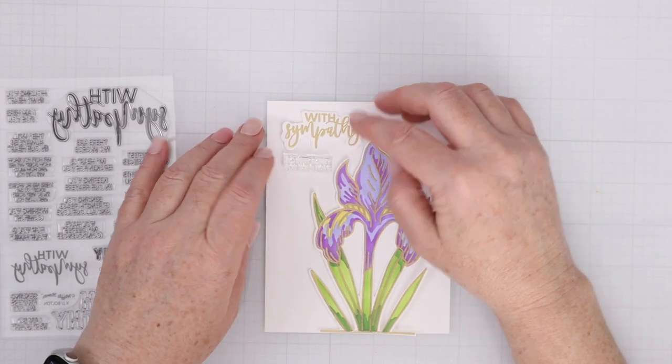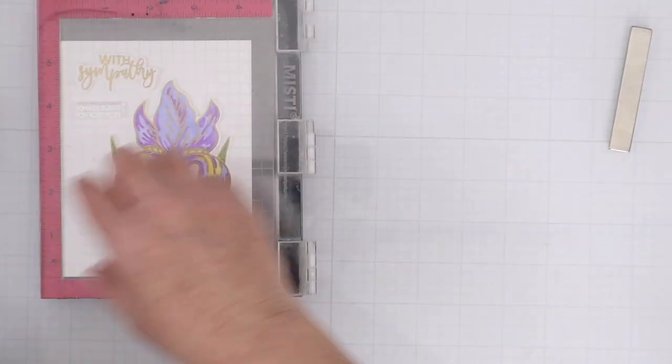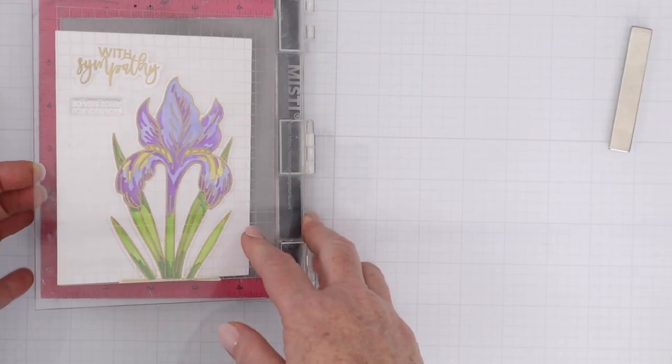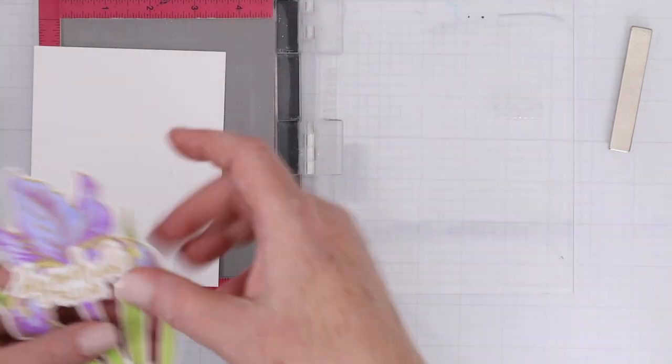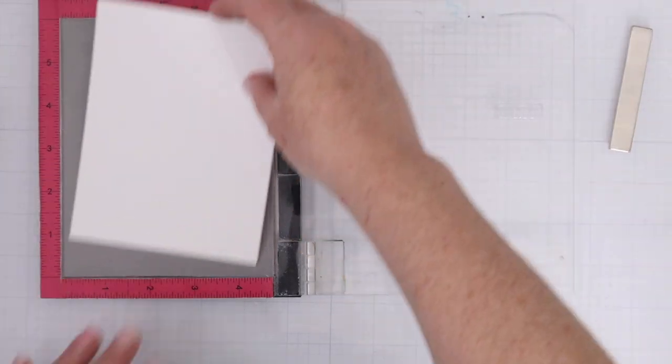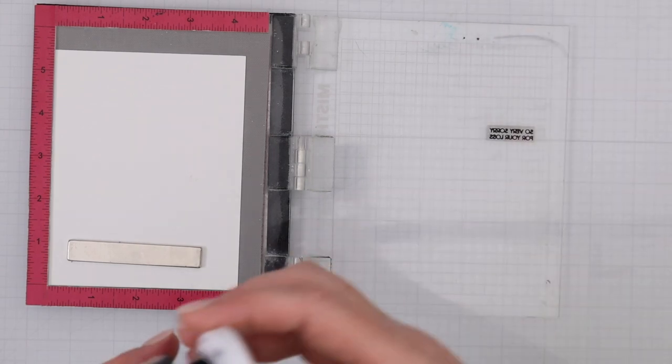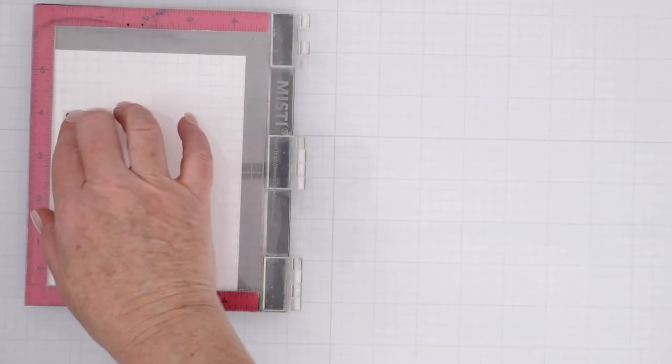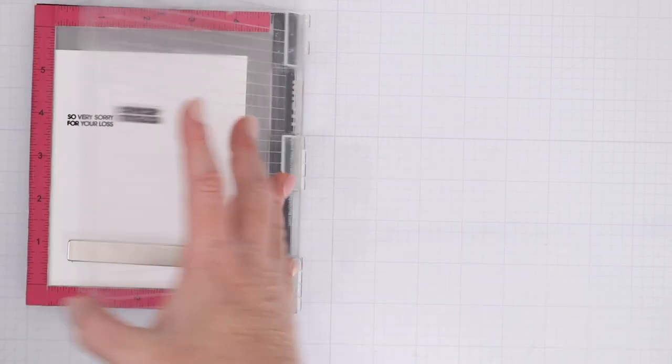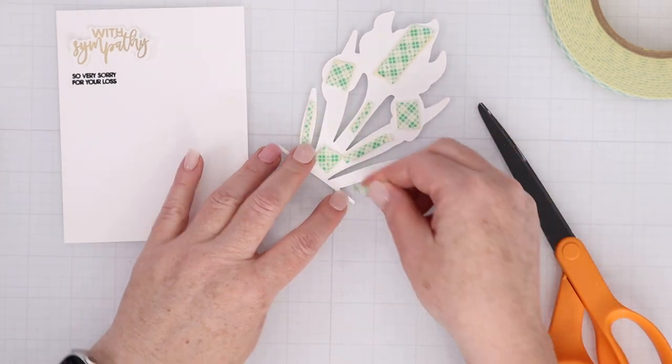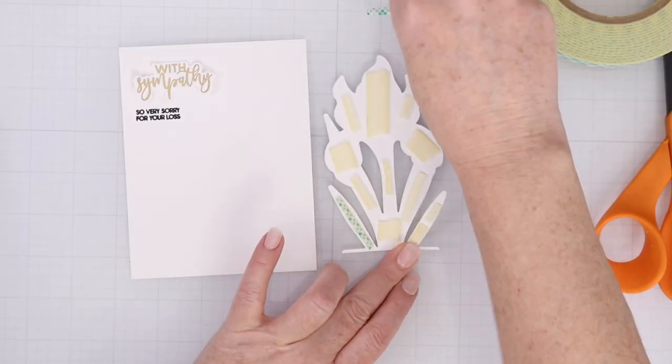Now I want to use one of the sub-sentiments. Like I mentioned, there are a ton for all kinds of cards, for ones that are individual, for ones that are from a group, for ones that are talking about just deep condolences, just everything you could imagine that you would need on a sympathy card. There's everything available. So I'm going to stamp the sub-sentiment that says, so very sorry for your loss in some black ink. And I did that in a place where I knew I could pop up the flower next to it and the With Sympathy above it.